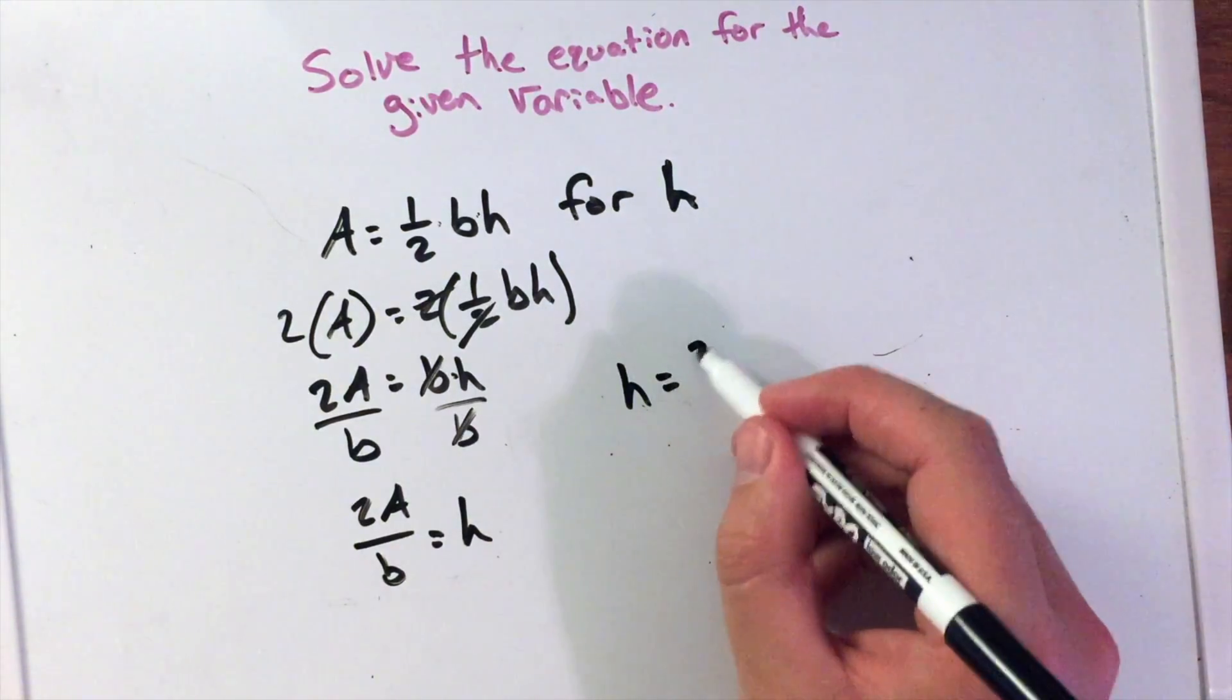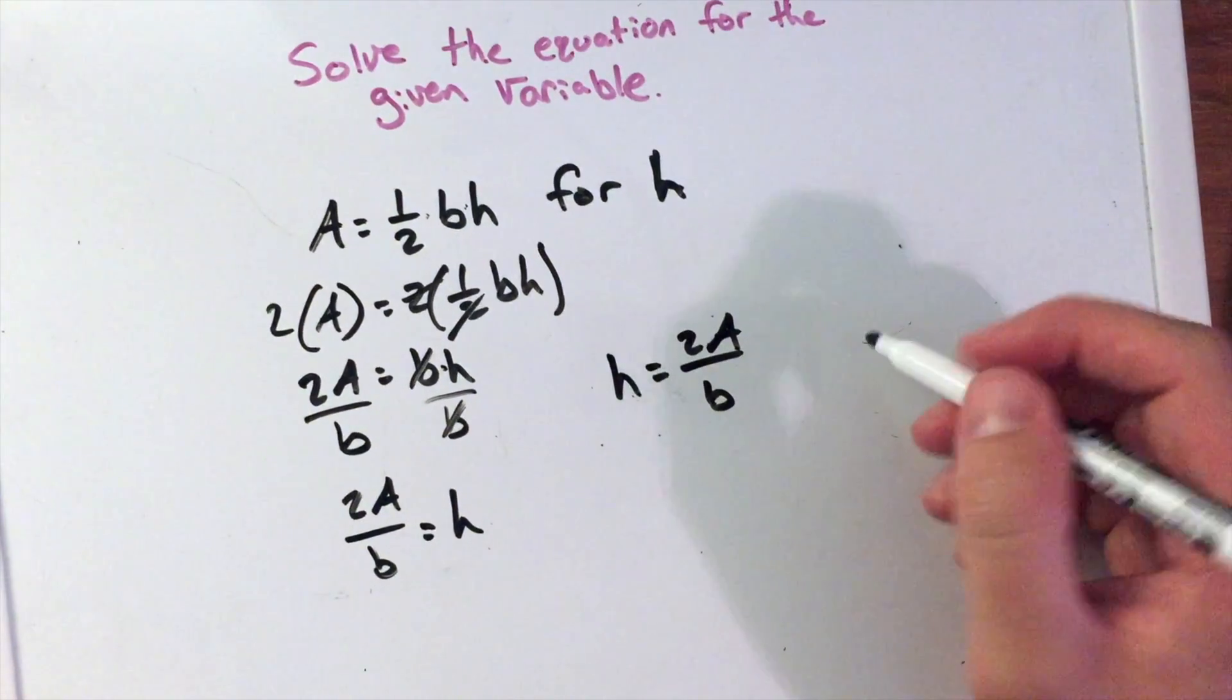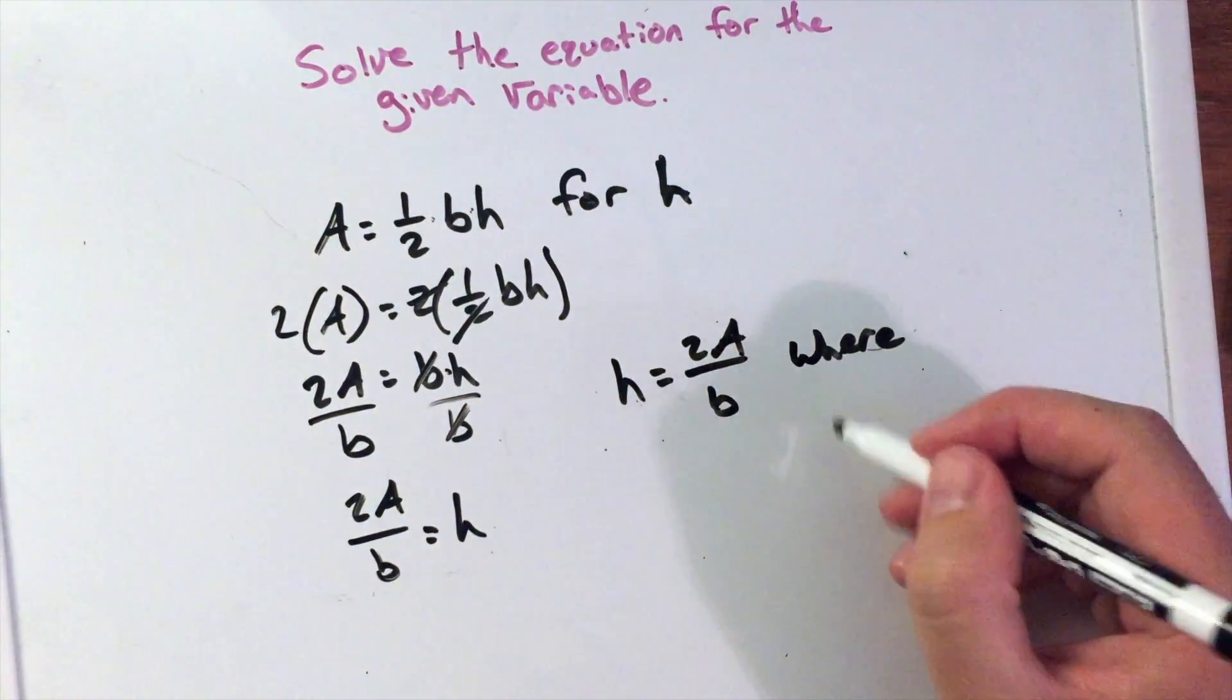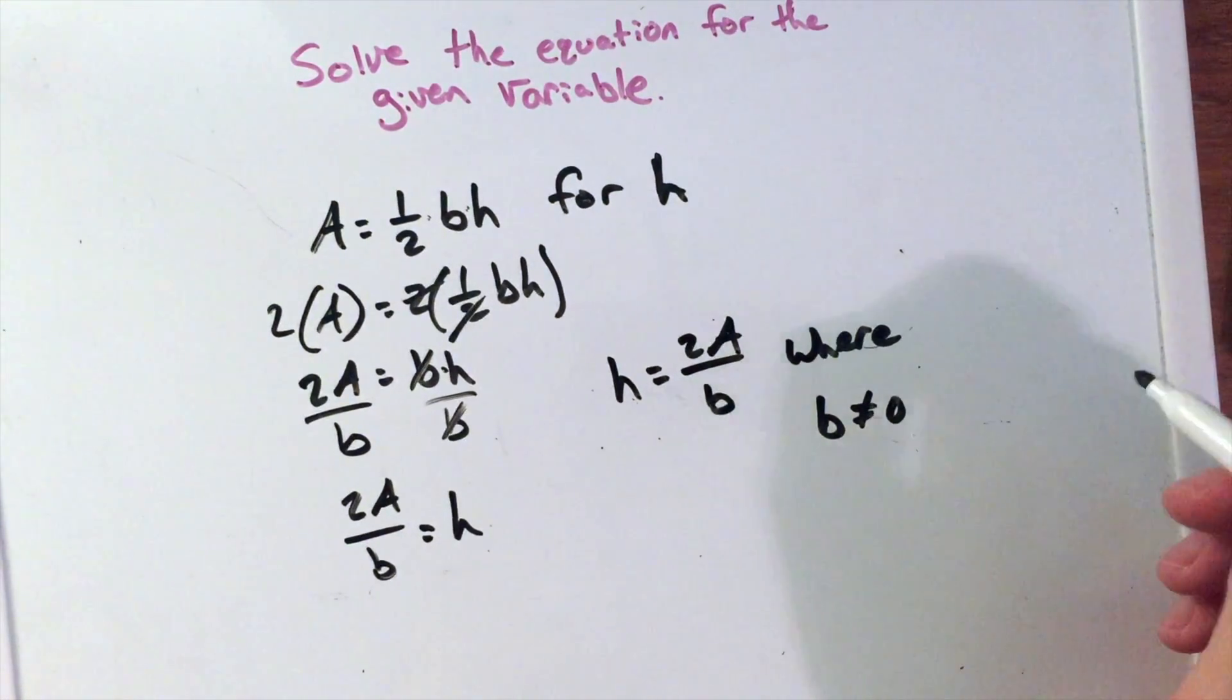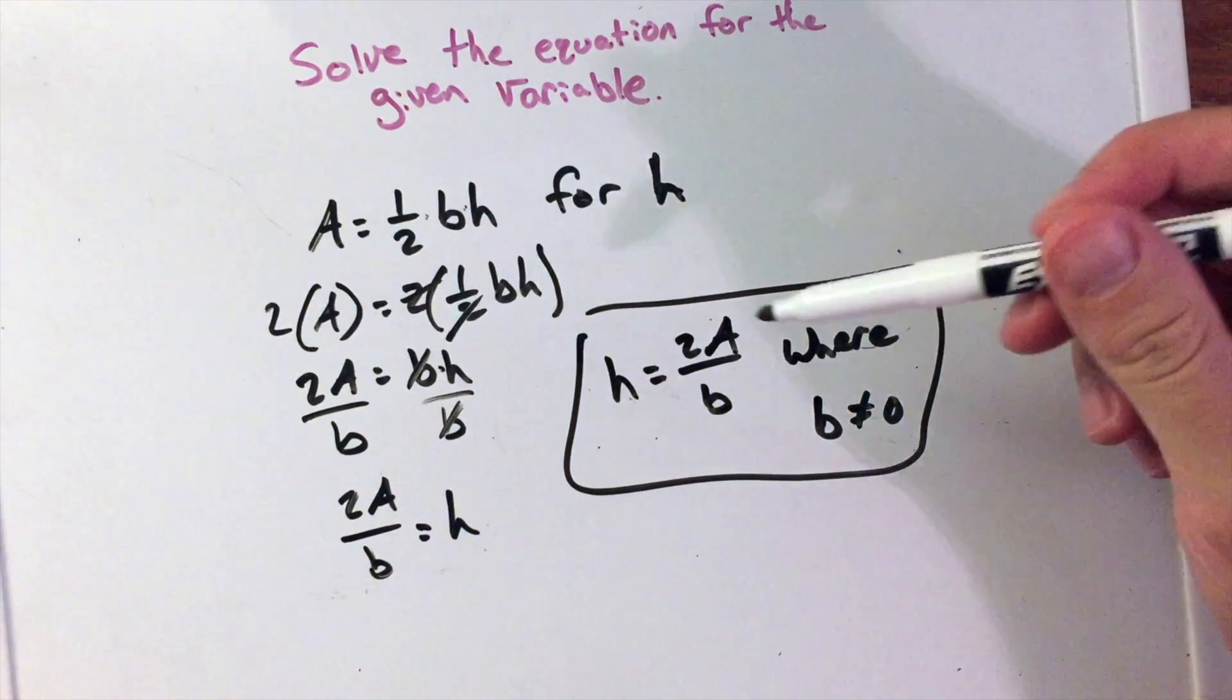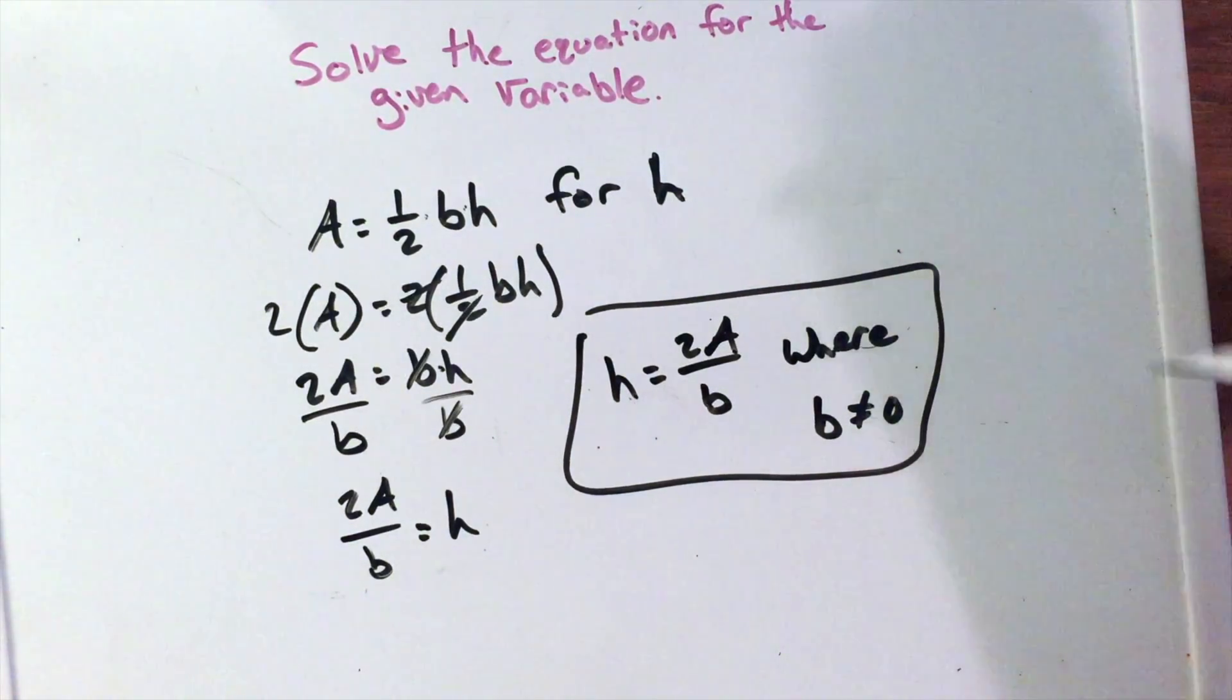So we can rewrite that to be h equals 2A over b. And we can make a little note here where b does not equal 0, because again, we cannot divide by 0. And that is important to know. So h here is equal to 2 times A over b, where b is not equal to 0.